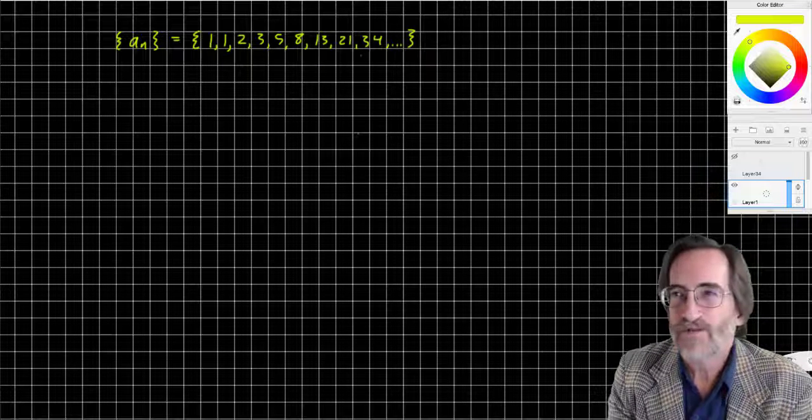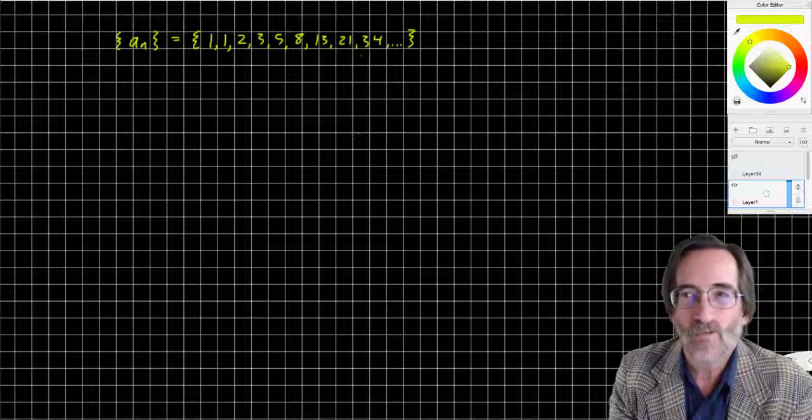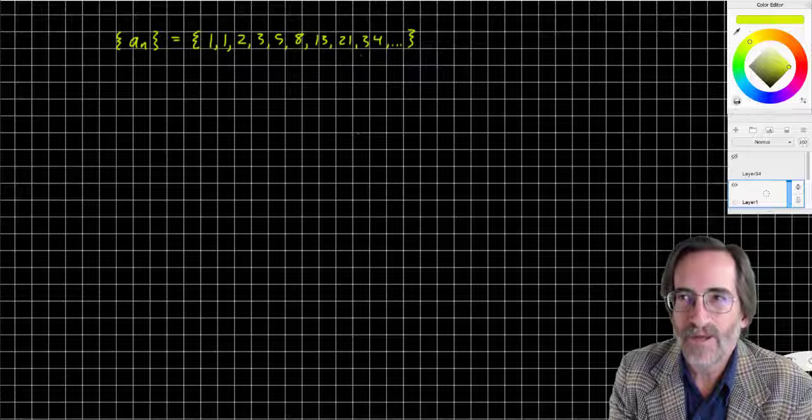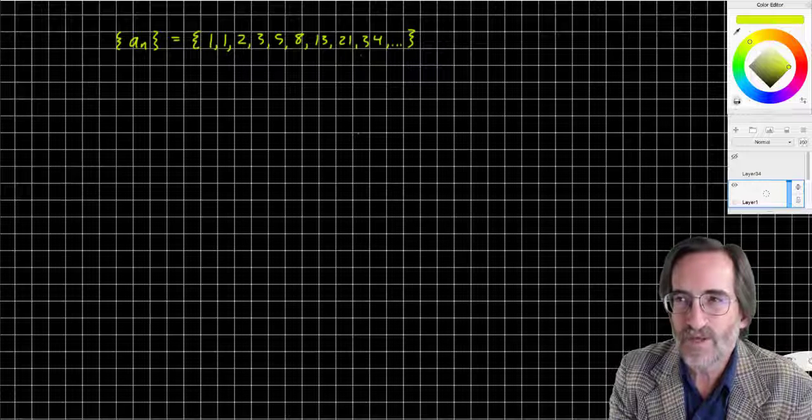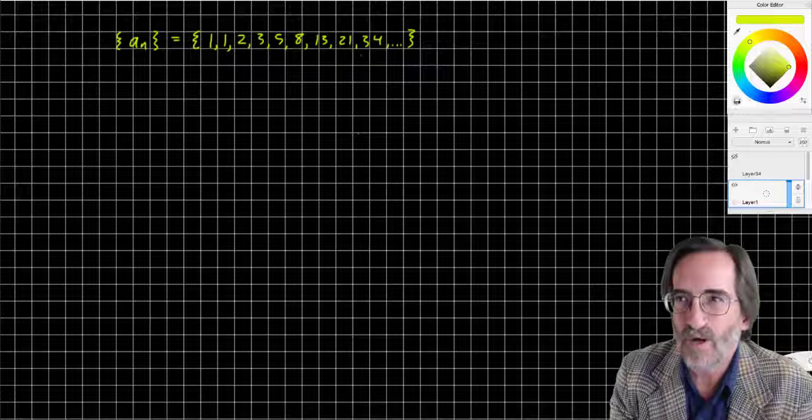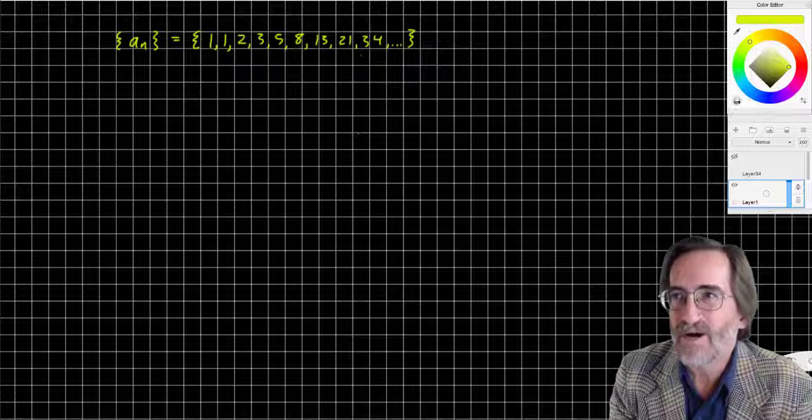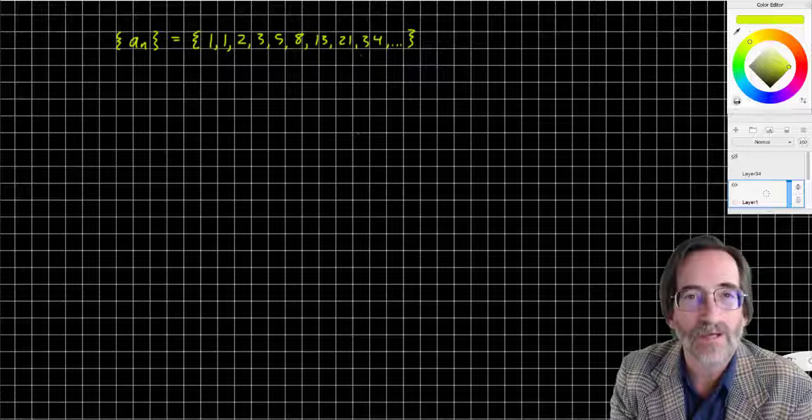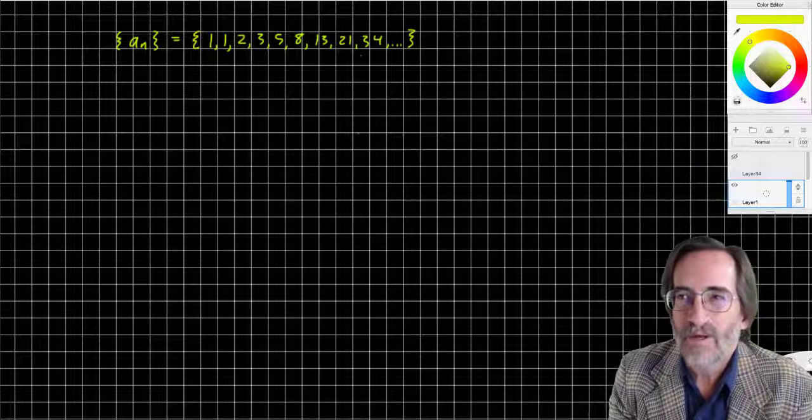I have on my screen an example of a sequence. It's read A sub n, or the sequence A sub n is equal to 1, 1, 2, 3, 5, 8, 13, 21, 34, and so on.